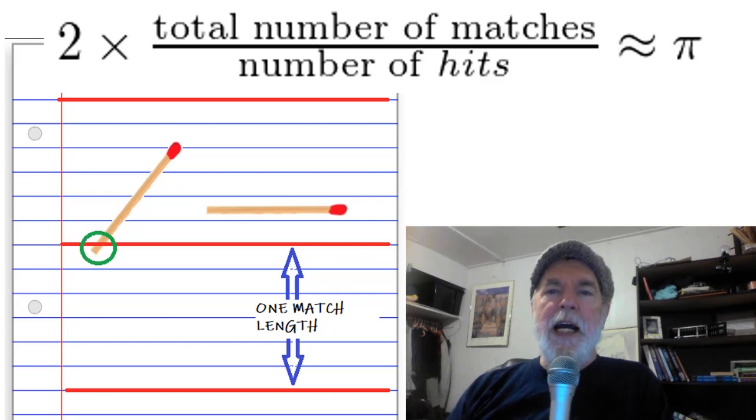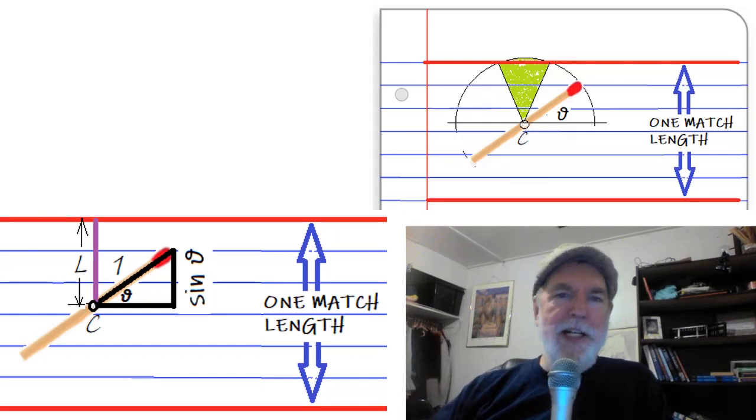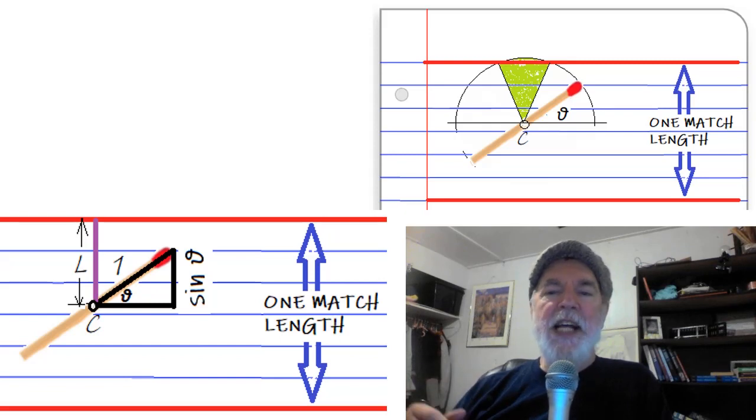Here's why it works. We can think of the match's position in terms of two parameters. One measure is the distance of the center from the nearest line, which is L in our diagram here. The other is the position that the match head takes along a semicircle—that's the angle theta.